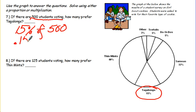Change your percent to a decimal by moving your decimal over two places to the left. Change your of to multiplication times 500. 500 times 0.15.